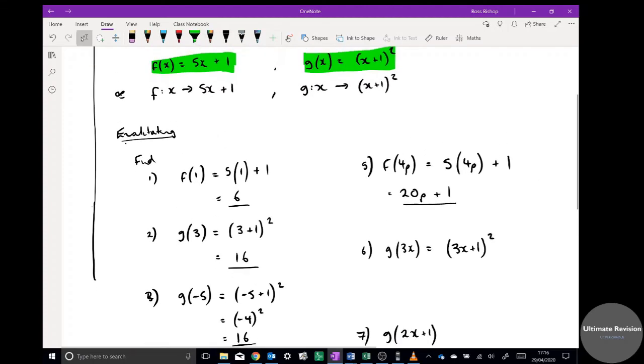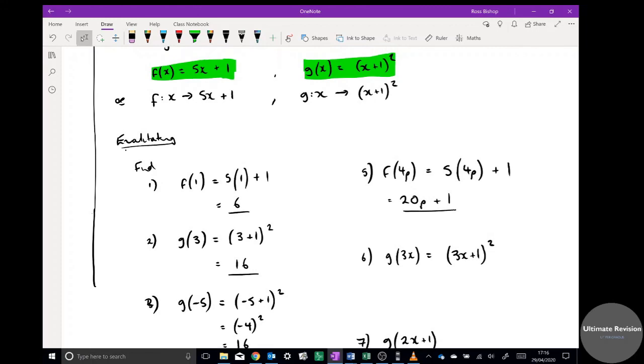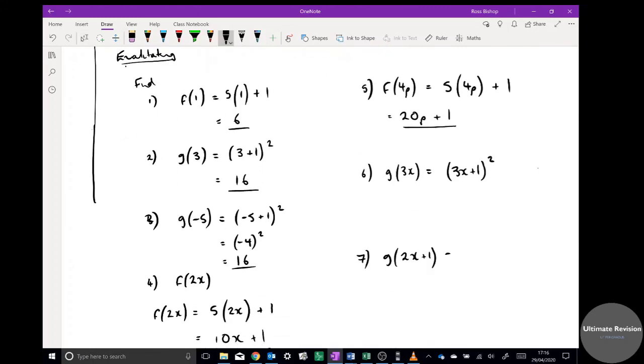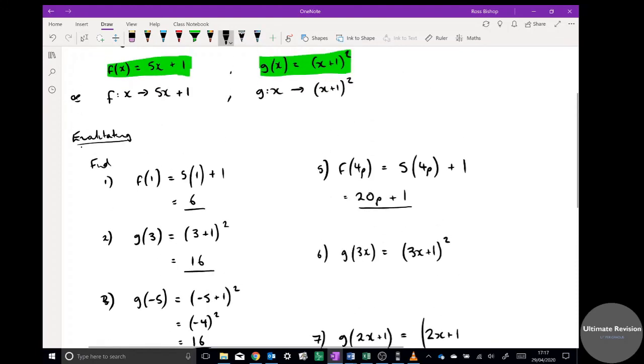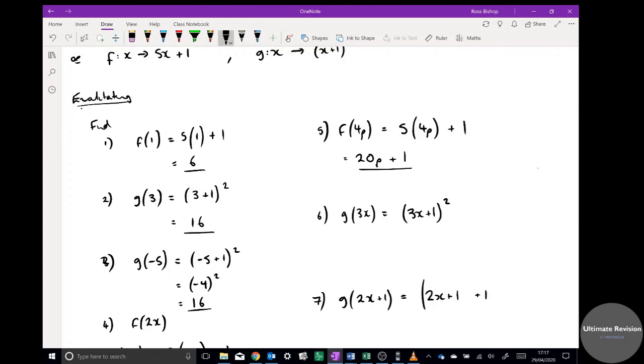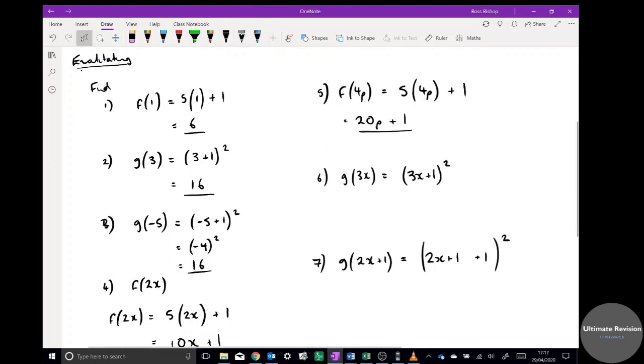I'm just going to leave it by that. They might want you to expand out the brackets but I'm just going to leave it like that. And the final one, g(2x+1): well I take the x out and I put 2x plus 1 in its place, plus the other one, squared. And I'm just going to simplify that to (2x+2) squared, and that will be my answer. It might ask you to multiply the brackets, it might not.